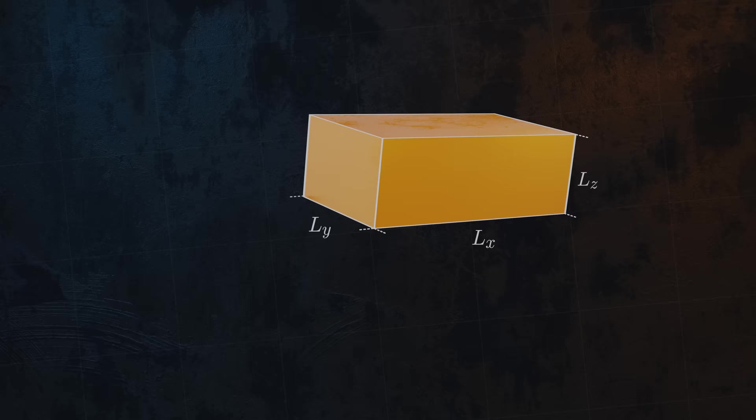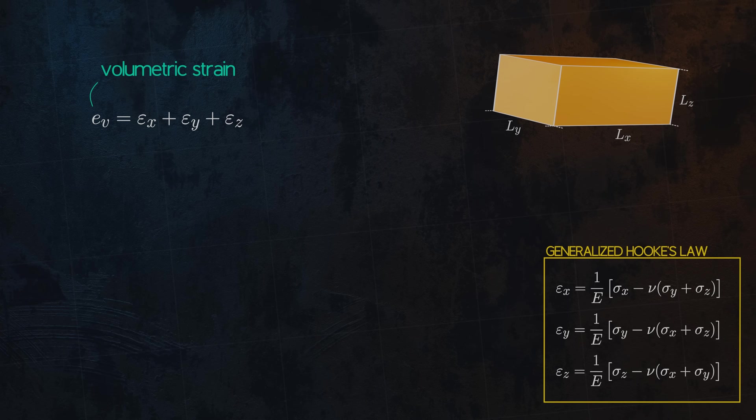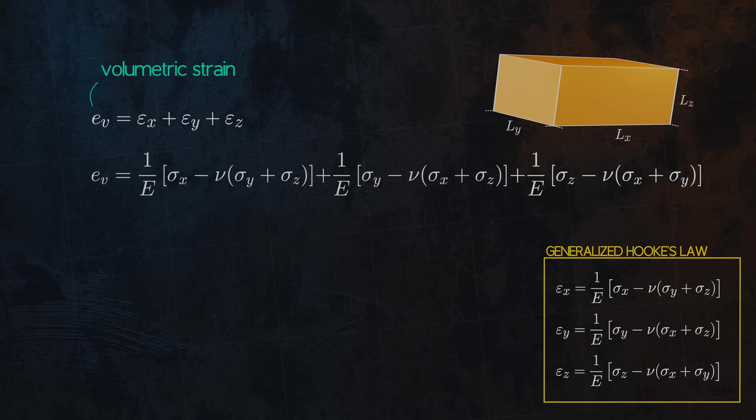We can calculate the volumetric strain by summing the strains in all three directions. Let's use the equations from the generalized Hooke's law we just covered to expand the equation for volumetric strain. We can then rearrange the terms to end up with the following equation.